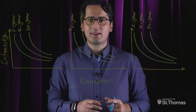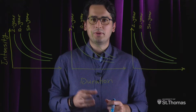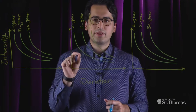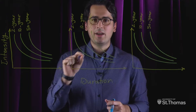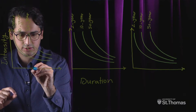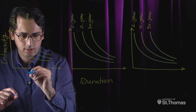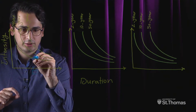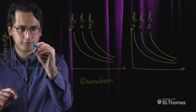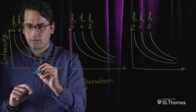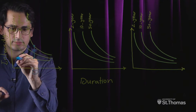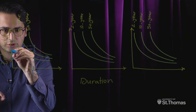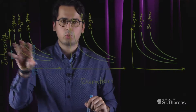Now that we understand IDF functions, we want to be able to interpret information from the curves. Let's consider a fixed duration D on the x-axis. As return period increases from 2 year all the way to 50 year, the intensity of rainfall also increases.